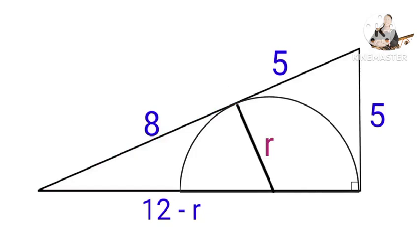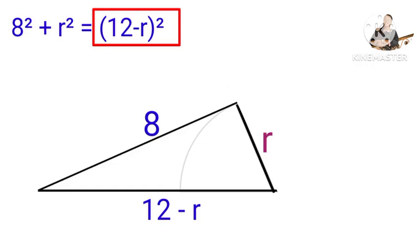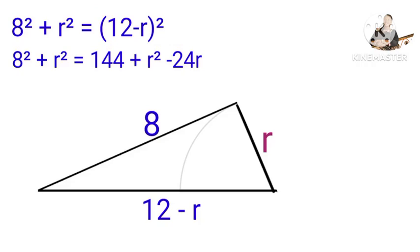Let's use Pythagoras' theorem. That will be 8 squared plus R squared equals (12 minus R) squared. Now let us expand this one. You are going to have this: 144 plus R squared minus 24R.